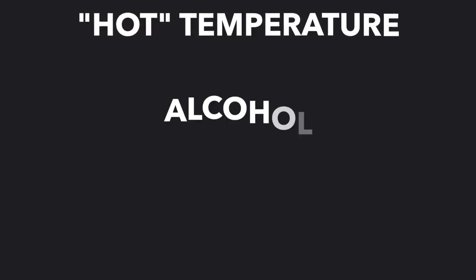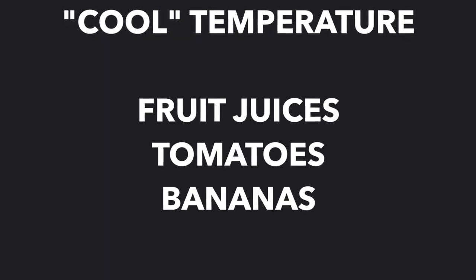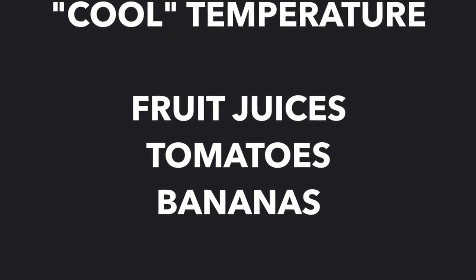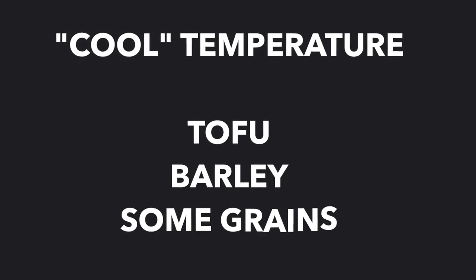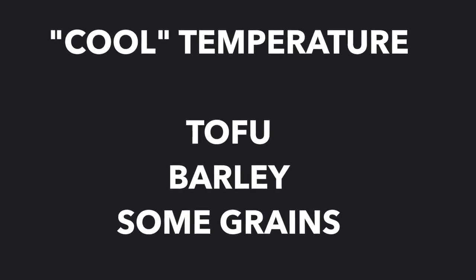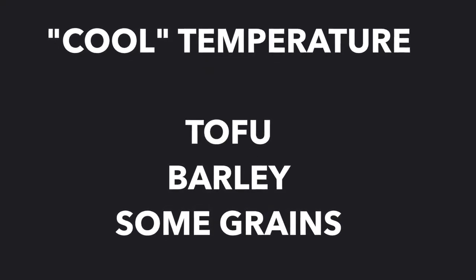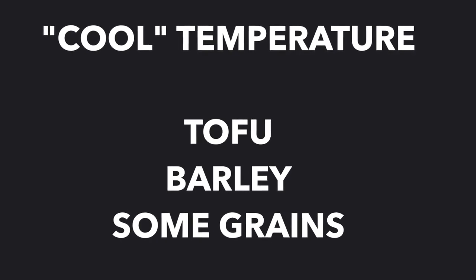Some examples of the chi or temperature: something that's hot would be alcohol, ginger, chilies, or peppers. Cool could be fruit juices, tomatoes, or bananas. As far as meats go, warmer meats are beef and chicken. And grains, for example, are typically on the cooler side of the spectrum — like barley, tofu, and wheat.